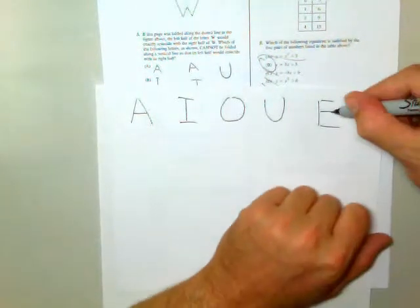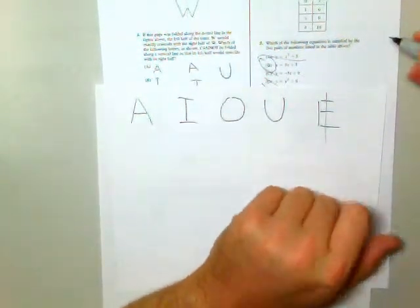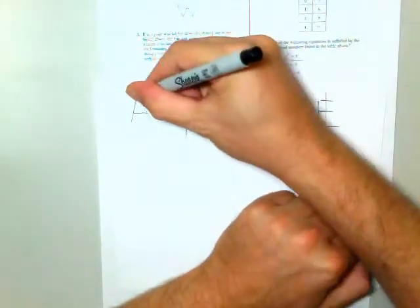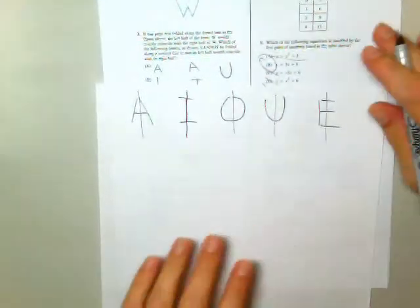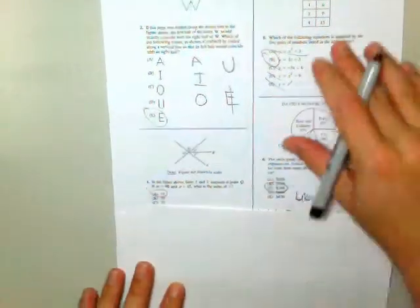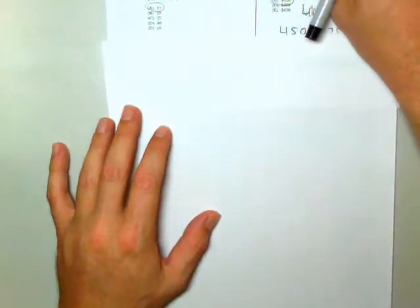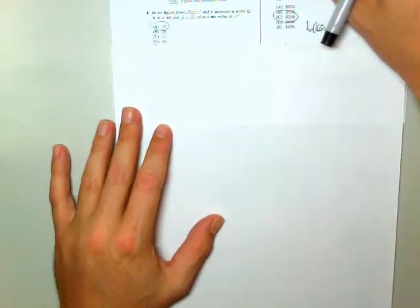The odd one out is E. E does not have vertical symmetry. U does, O does, I does, right down the middle. But E doesn't. Here's our answer. That's number 3, which is E, choice E as well.